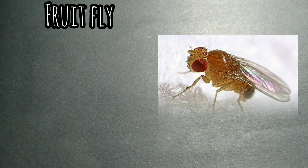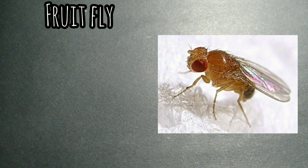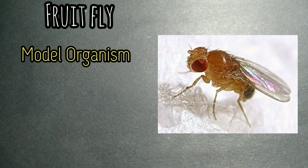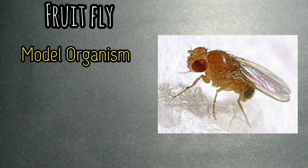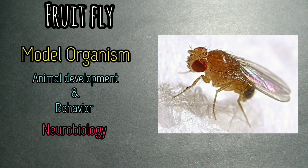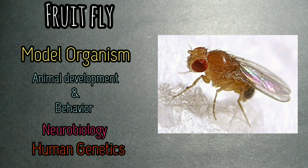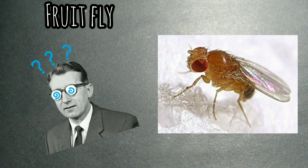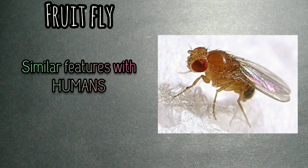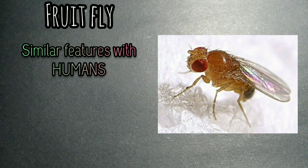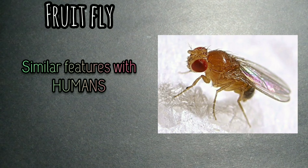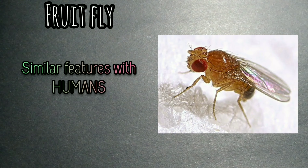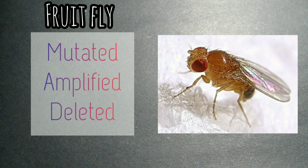The fruit fly Drosophila melanogaster has been extensively studied for over a century as a model organism for genetic investigations. It also has many characteristics which make it an ideal organism for the study of animal development and behavior, neurobiology, and human genetic diseases and conditions. Approximately 60% of a group of readily identified genes that are mutated, amplified, or deleted in a diverse set of human diseases have a counterpart in Drosophila.